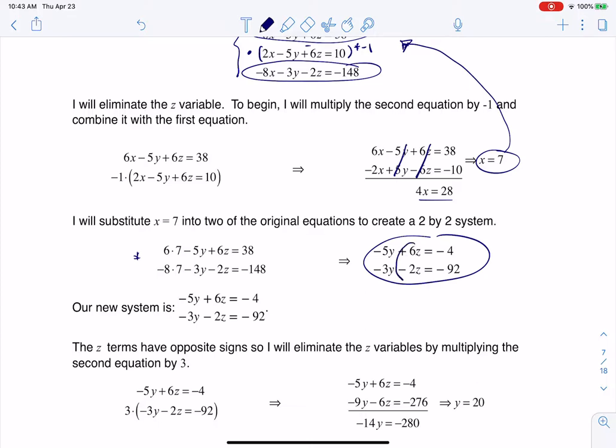And that becomes a lot easier to solve now with elimination. And again, I'm going to still opt to eliminate the z's. They have opposite signs, and 6 is a multiple of 2, so that's great.